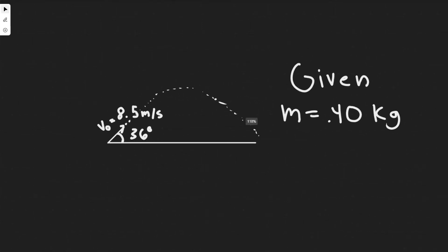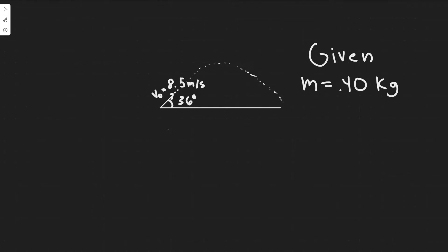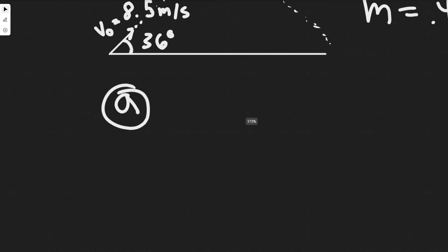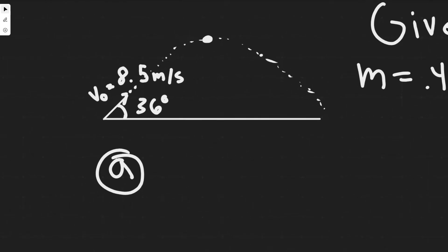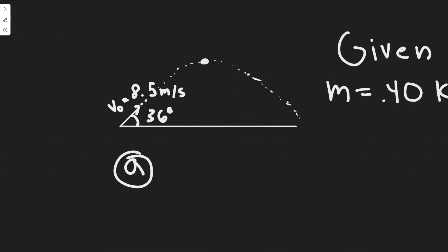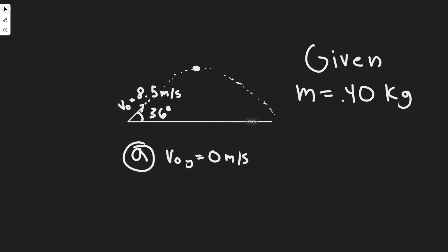Let's go ahead and understand what's going on here. We have this ball thrown at an angle of 36 degrees with initial velocity of 8.5 meters per second. We're also given the mass, so let's start with part a. We're trying to find the speed at its highest point. The thing you have to understand is when you throw a ball like this, you should remember from kinematics that the velocity of the ball in the y direction is 0 at its highest point.